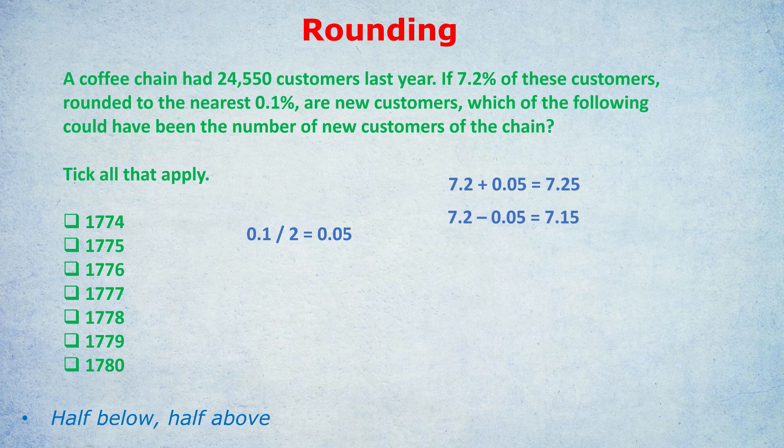This is an important moment for students who struggle with finding the boundaries. Take the figure you're rounding to — for example, if they say rounding to the nearest integer, an integer is 1, and half of 1 is 0.5. So we add 0.5 and take away 0.5 to find upper and lower boundaries. Whatever they say we're rounding to, take that figure, divide by 2, then add or subtract from the rounded number to find the upper and lower bound.